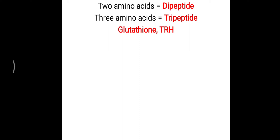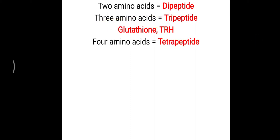Two important examples of tripeptides present in our body that you must remember: glutathione, which is gamma-glutamyl cysteinyl glycine, and TRH. These two are tripeptides containing three amino acids.